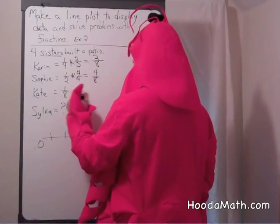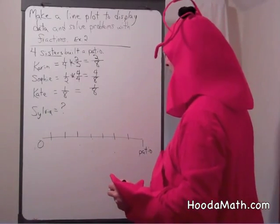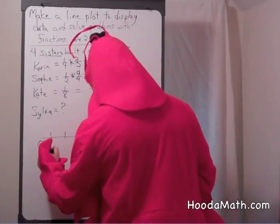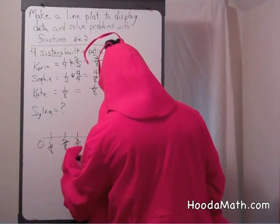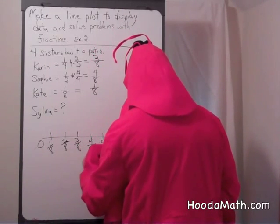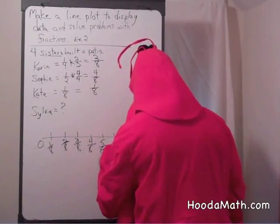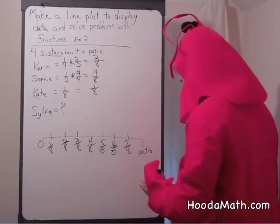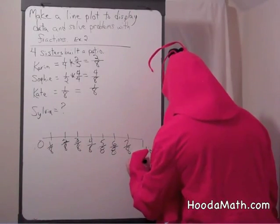And, of course, one eighth equals one eighth. How much have they built so far? Well, we can make this line into eighths: one eighth, two eighths, three eighths, one half which is four eighths, five eighths, six eighths, seven eighths, and the whole thing which is eight eighths, or one whole patio.